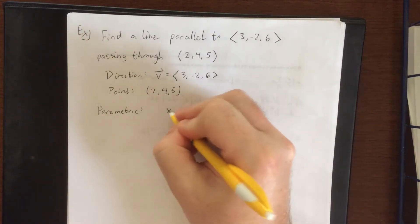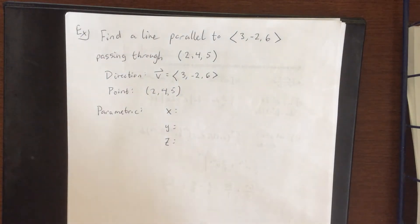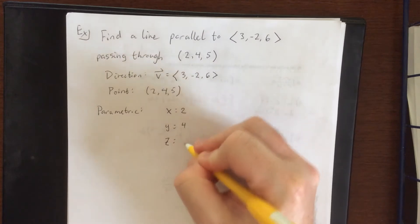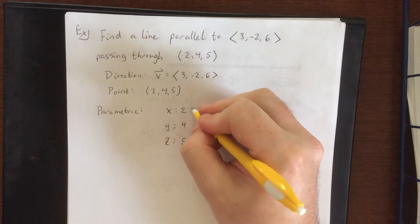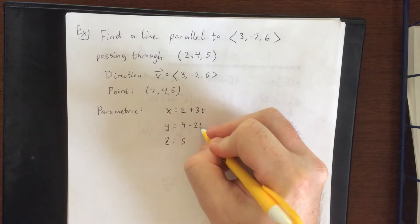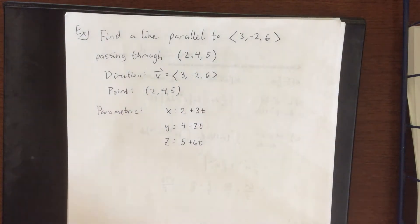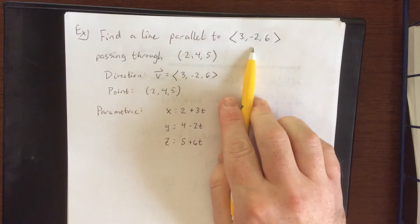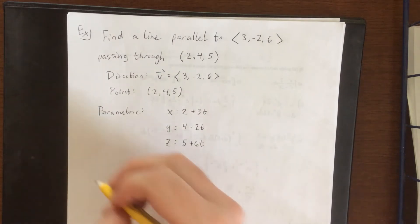The parametric form has x equals, y equals, and z equals, starting from the point (2, 4, 5) plus vector component times t. So for x that'll be plus 3t, for y that'll be minus 2t, and for z that'll be plus 6t. That is the parametric form of this line. This is not a unique parameterization — any scalar multiple of this vector would still define the same line.